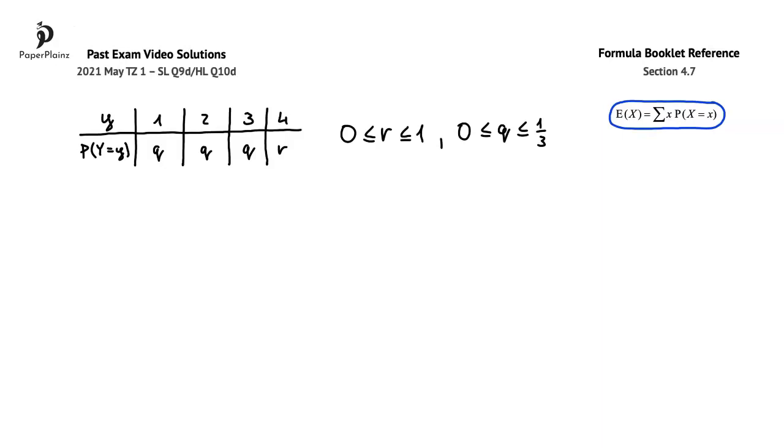What the formula tells us is that in order to get EY, we have to multiply each Y value by the corresponding probability, and then add these products. So we get 1 times Q, which is Q, plus 2 times Q, so 2Q, plus 3 times Q, so 3Q, plus 4 times R, so 4R. Collecting the terms, we get that EY is equal to 6Q plus 4R.